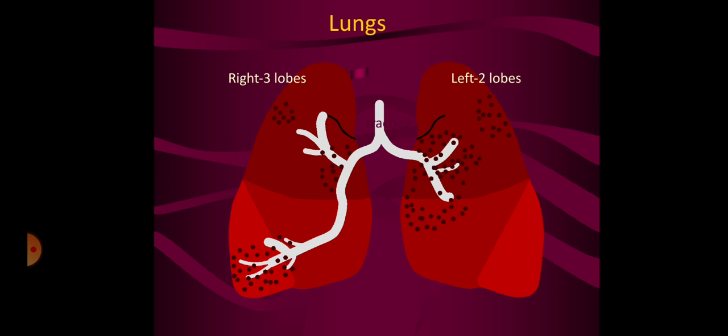The lungs have two lobes, the right and the left. The right has three lobes and the left has only two lobes.